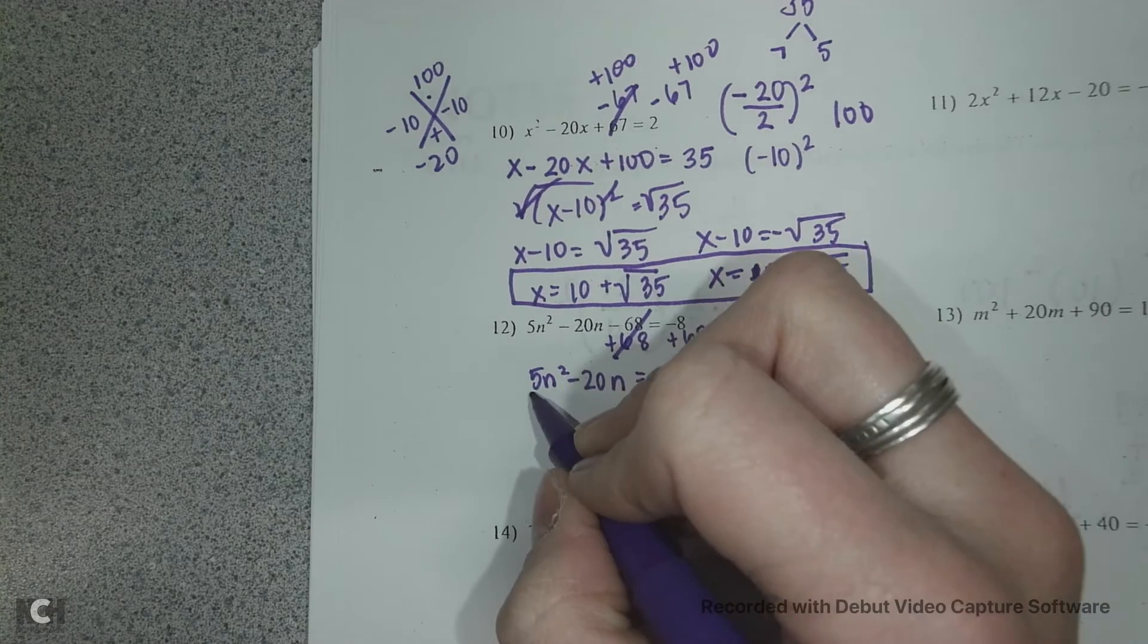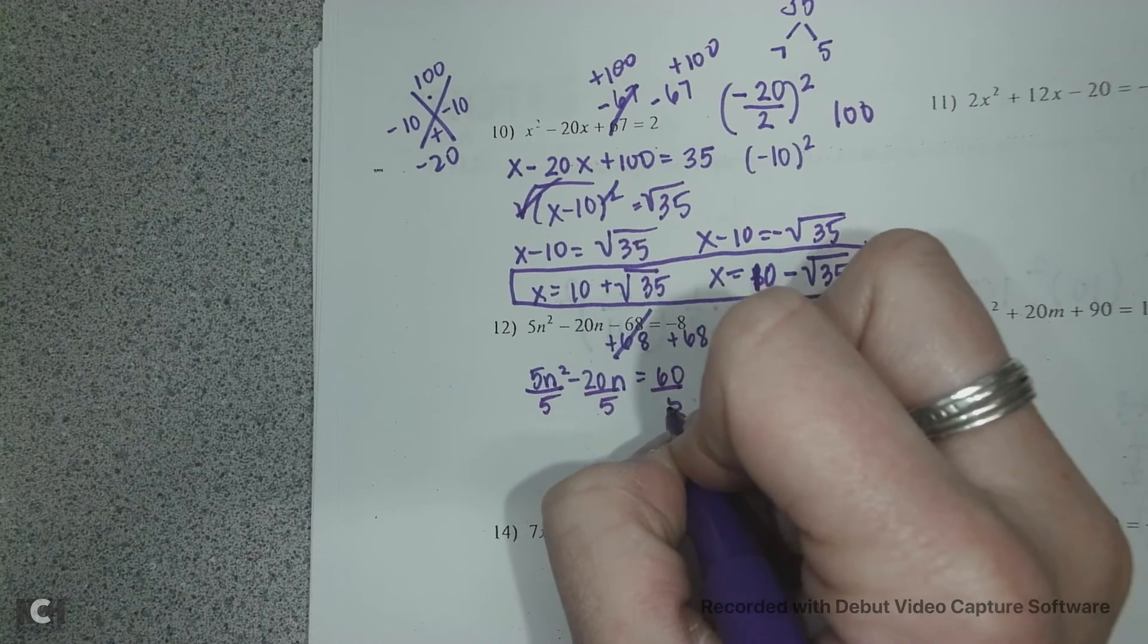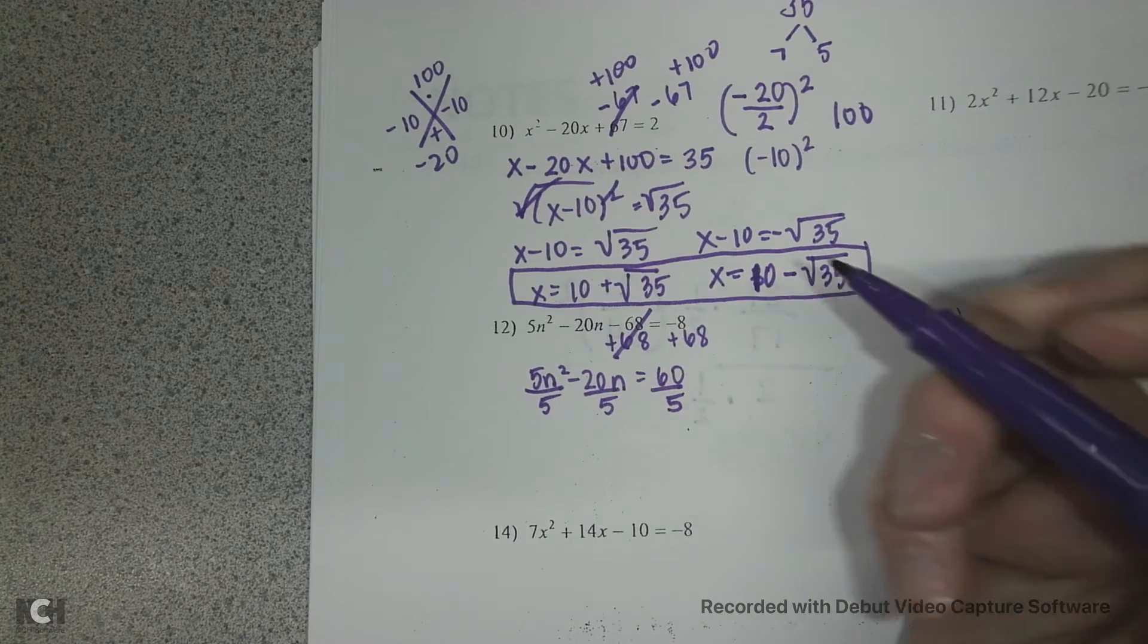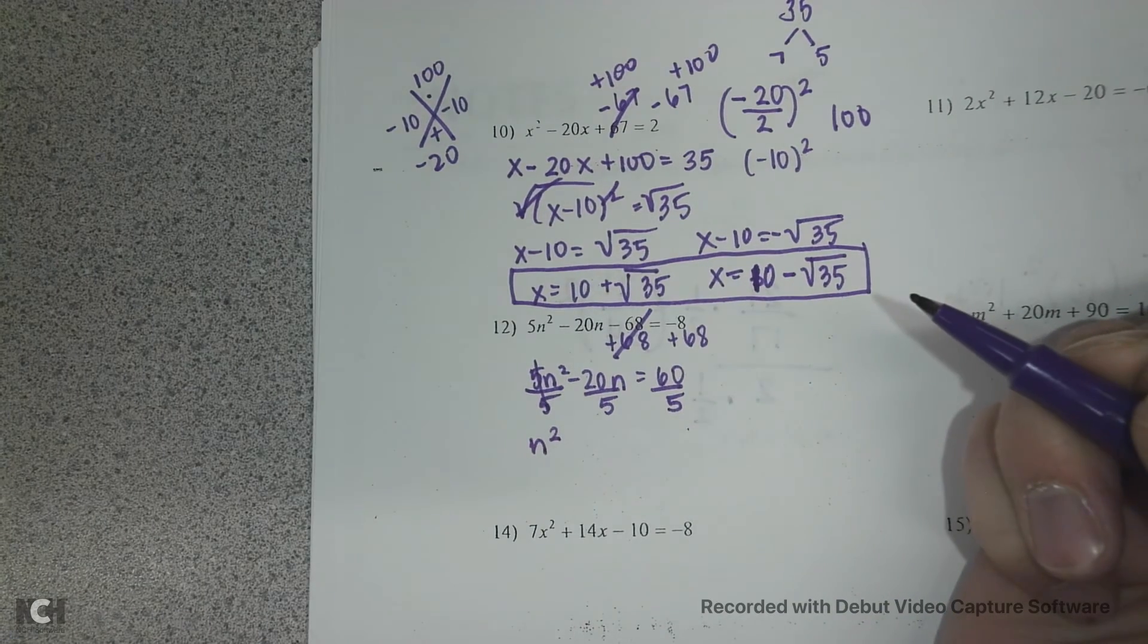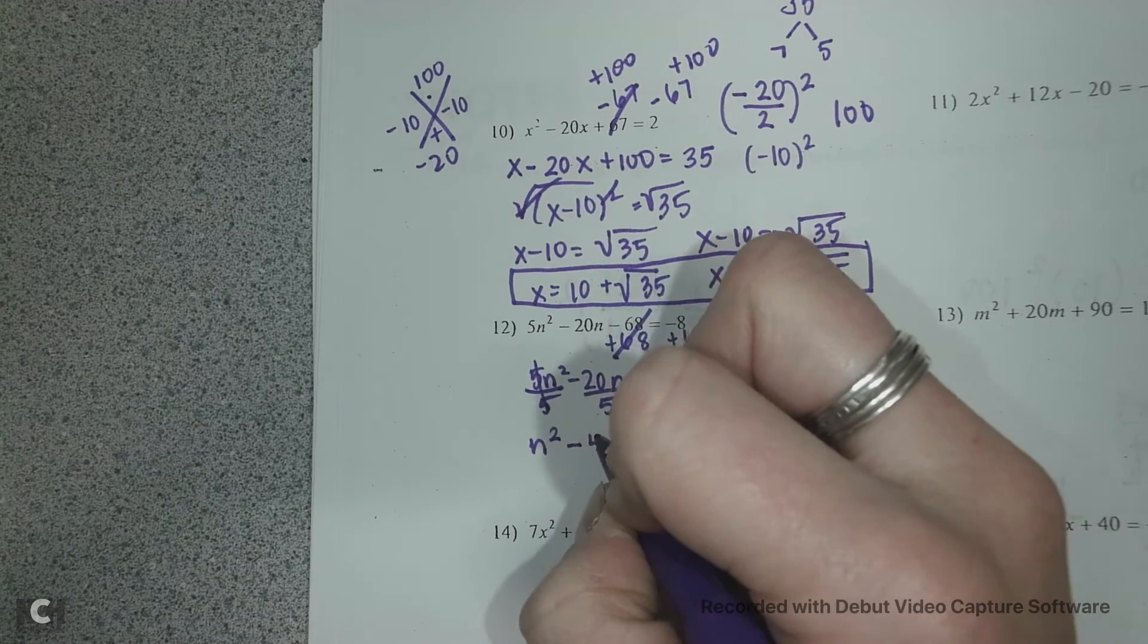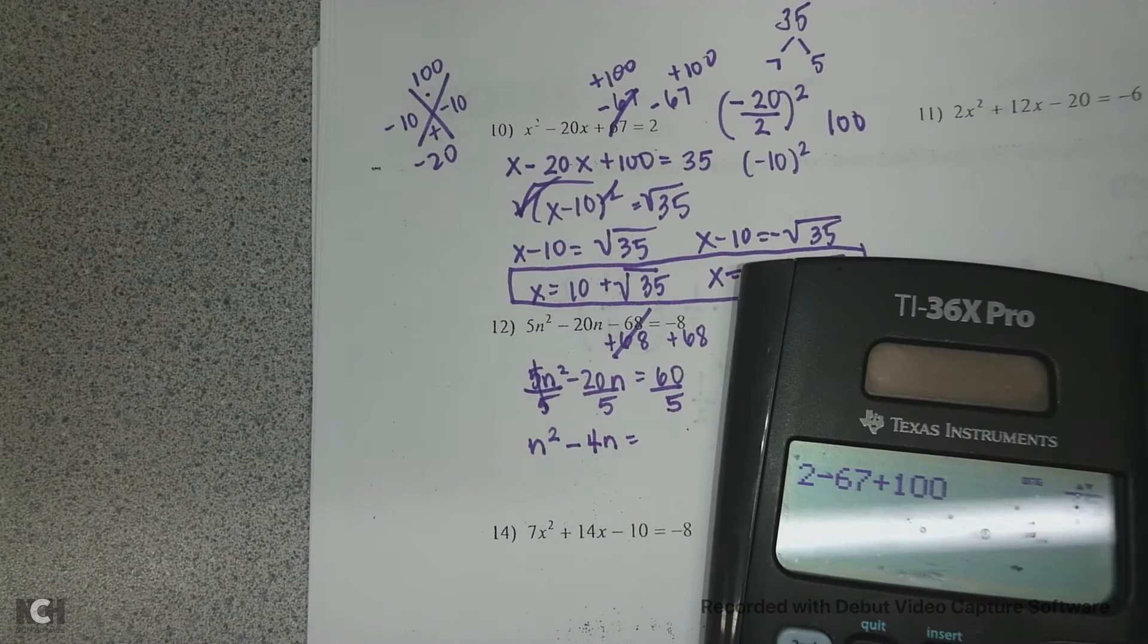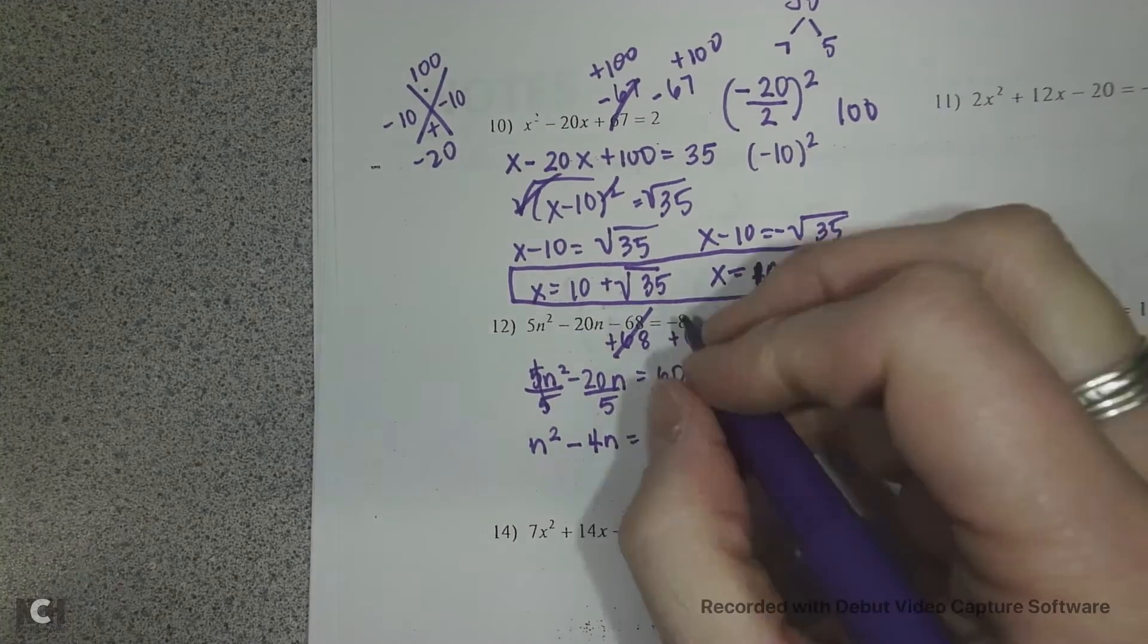So again, when you have a leading coefficient, move your c first, and then everything gets divided by 5. We're going to take a fifth of as much from everything. And that keeps our equation equal. So my 5s go away, leaving n squared. So whatever your leading coefficient is, your a value, that's what you're going to divide by. So n squared minus 20 divided by 5 is 4 equals 60 divided by 5 is 12.